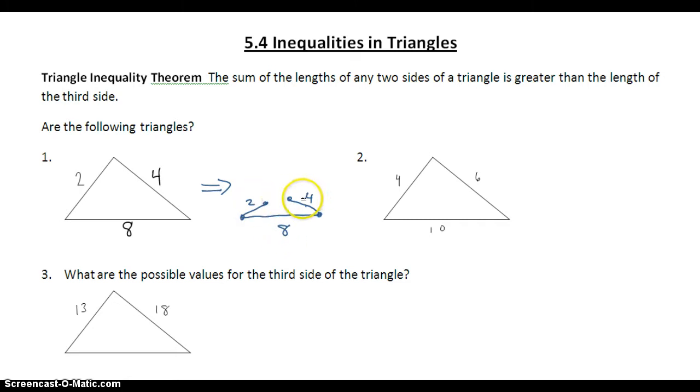2 plus 4 is less than 8. So in this first example, even though we have a shape that looks like a triangle, when it's drawn to scale, we actually don't have a triangle.